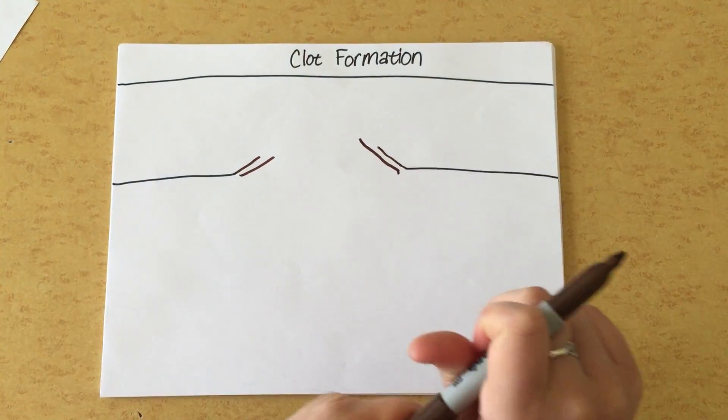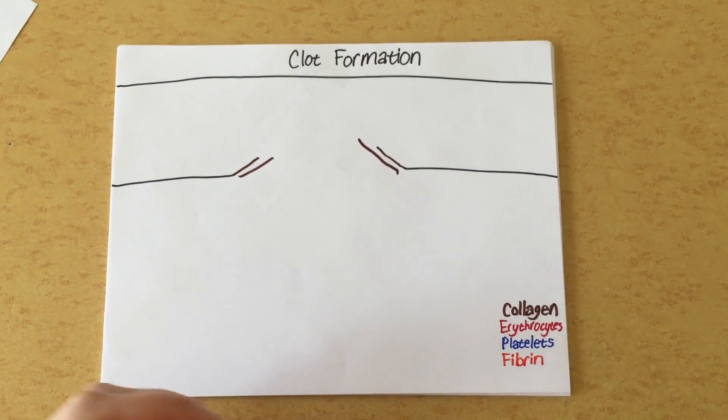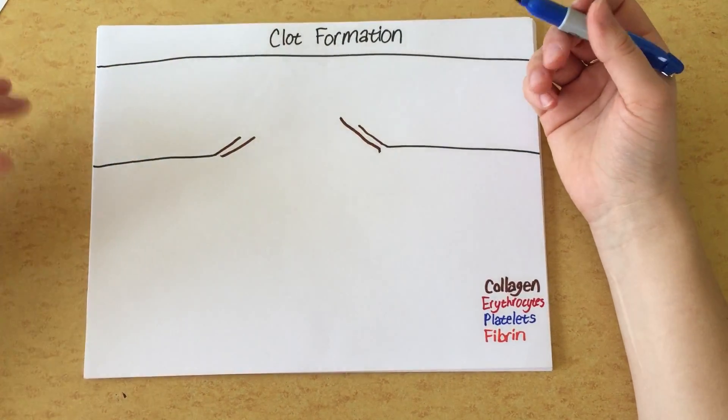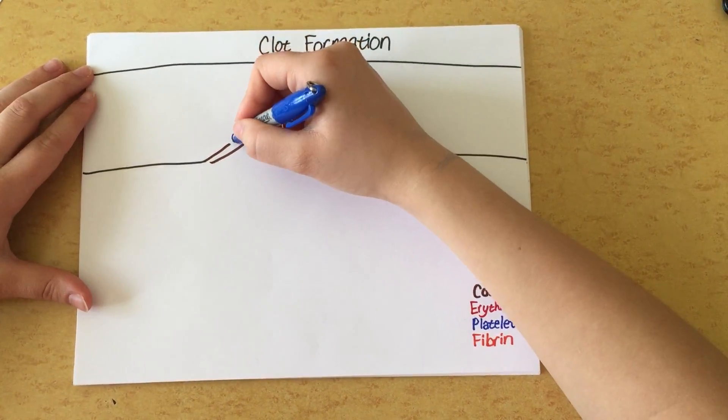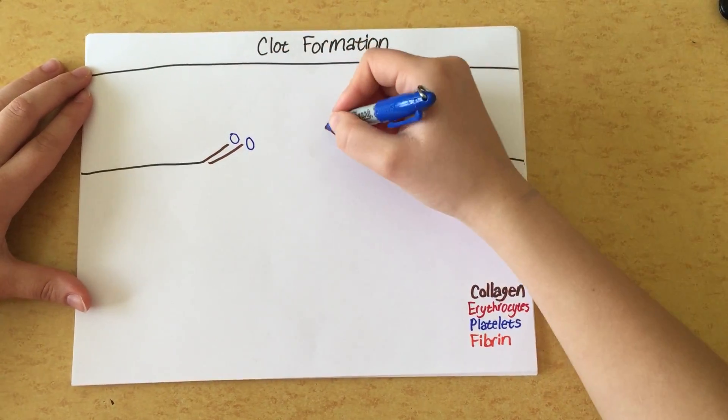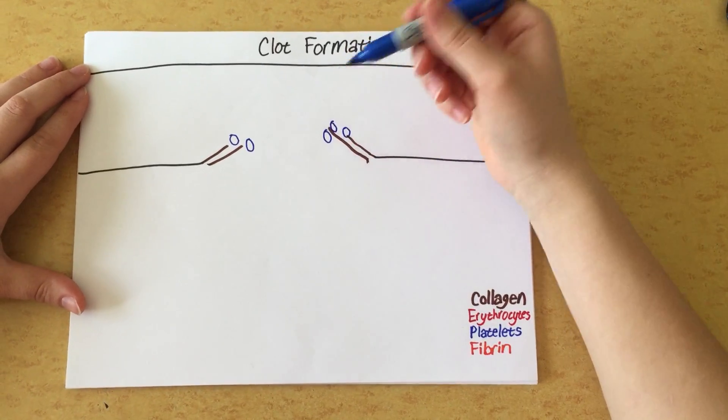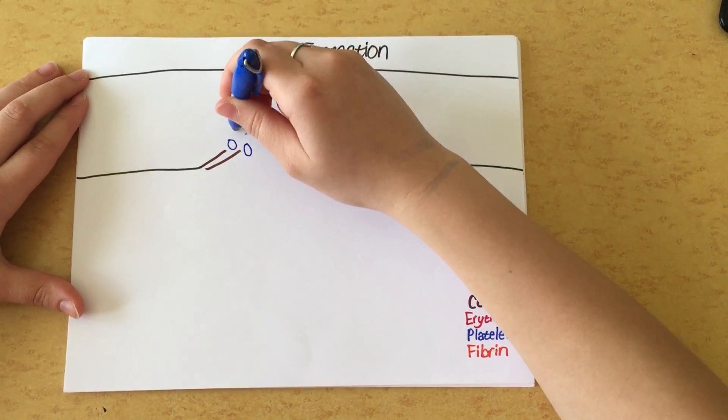Now this collagen that's exposed will attract platelets, or those thrombocytes that broke off from the megakaryocyte. Now the platelets, here in blue, will bind to that collagen.